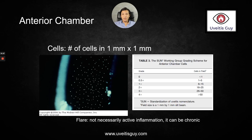The anterior chamber examination is very important because that way you can communicate and follow the patient and see if there is improvement. Use a small, square, one-millimeter-by-one-millimeter beam, high magnification, a lot of light, and count the cells. Flare doesn't mean active inflammation — some patients with chronic changes will have chronic flare that will not go away even if the inflammation is under control.